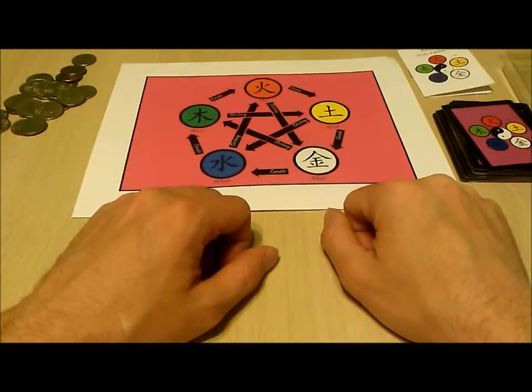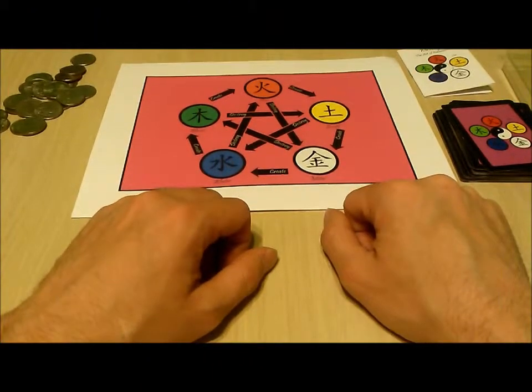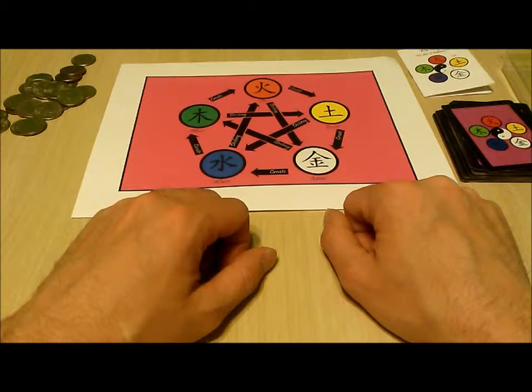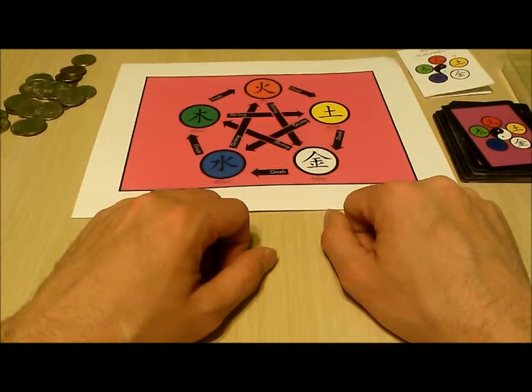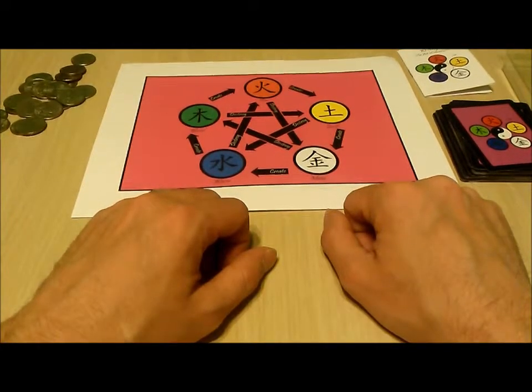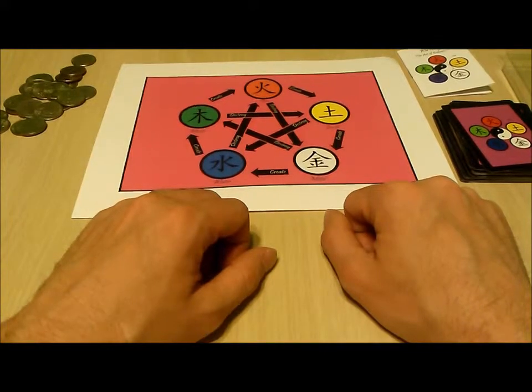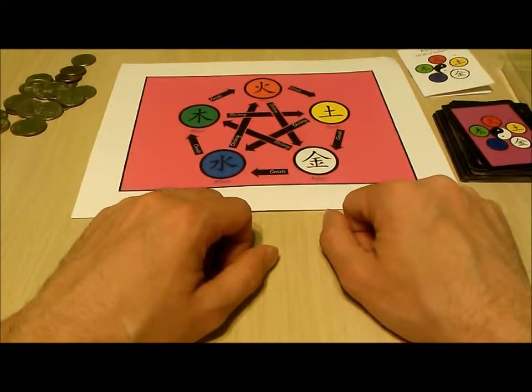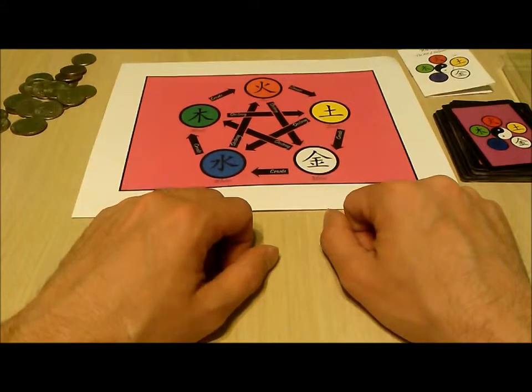We need to set up the board. We do this by drawing a total of five cards from the top of the deck one at a time. For each card we place a token on the element it creates and remove a token if one is present from the element it destroys. As we do this we discard the cards. If the dragon is drawn it is set aside and a replacement card is drawn.